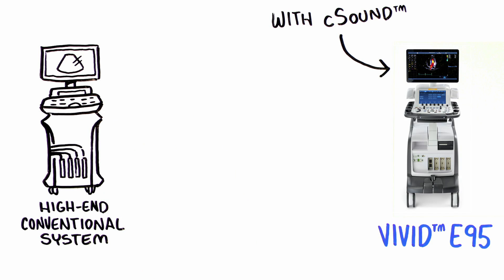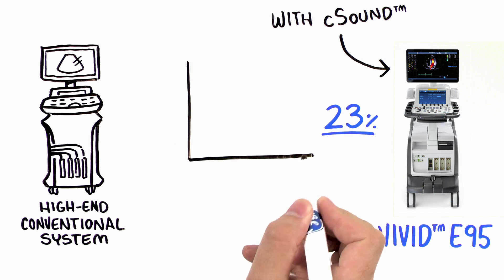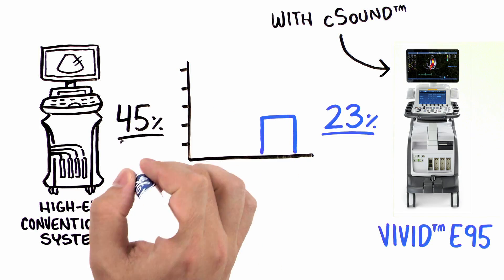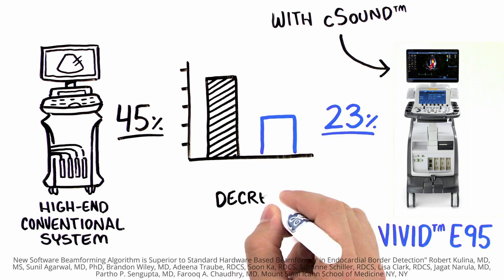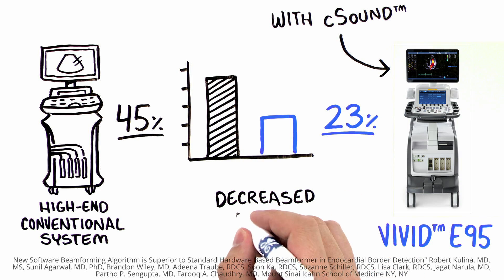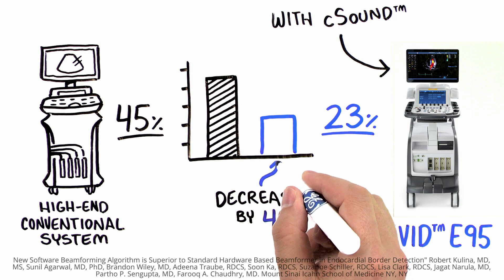In this case, the additional testing was the intravenous administration of a contrast agent. Only 23% were determined to need contrast using the Vivid E95 with C-Sound compared to 45% for the hardware-based platform. The C-Sound software beamforming technology resulted in better image quality and decreased the need for contrast usage by 49%.